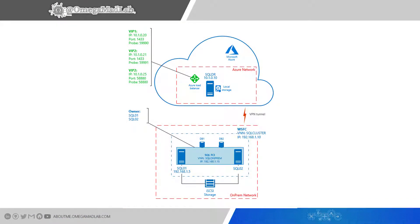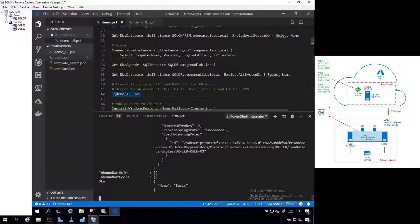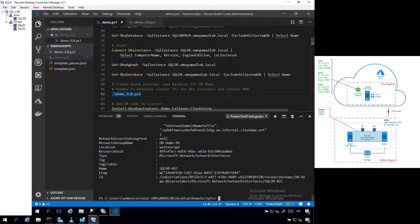The first step needed while extending your solution to the Azure Virtual Data Center is to provision an Azure Load Balancer that will manage all the clustered IPs for the SQL DR node in Azure. We will start creating the load balancer with three virtual IPs — one for the clustered instance and two for each basic availability group that will protect our databases. I'm using a script from the GitHub repository to provision the load balancer configured as shown in the schema.